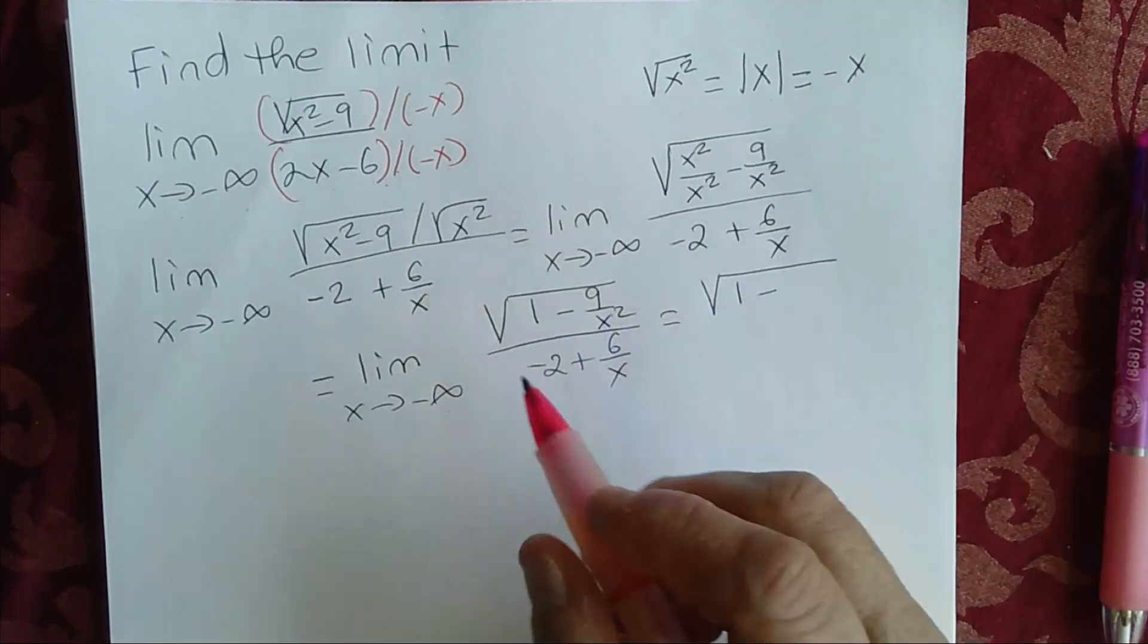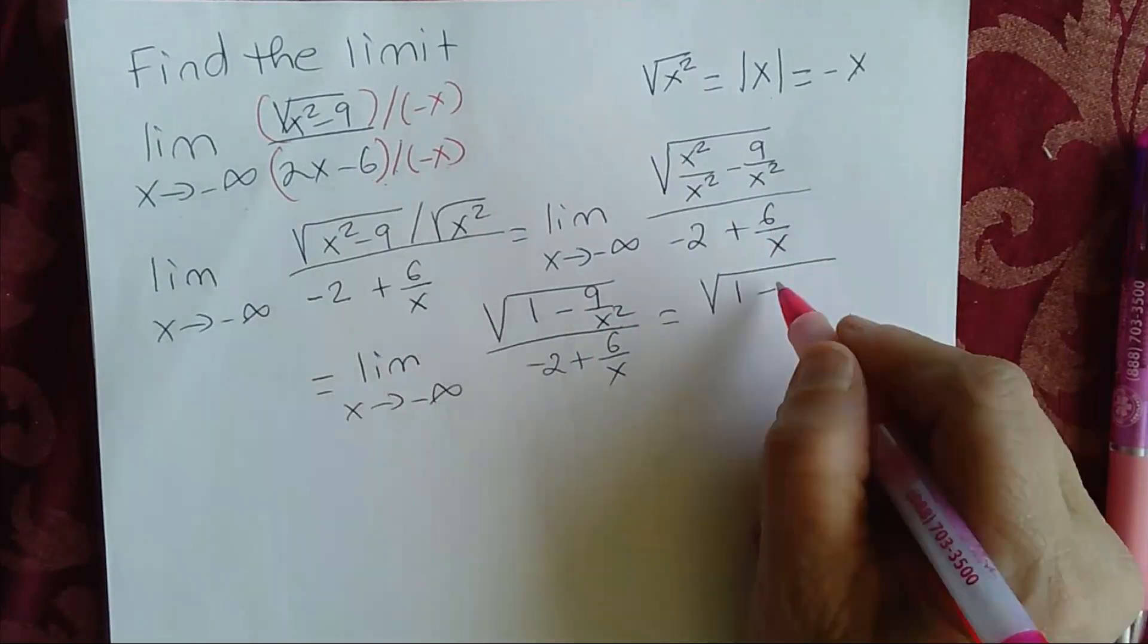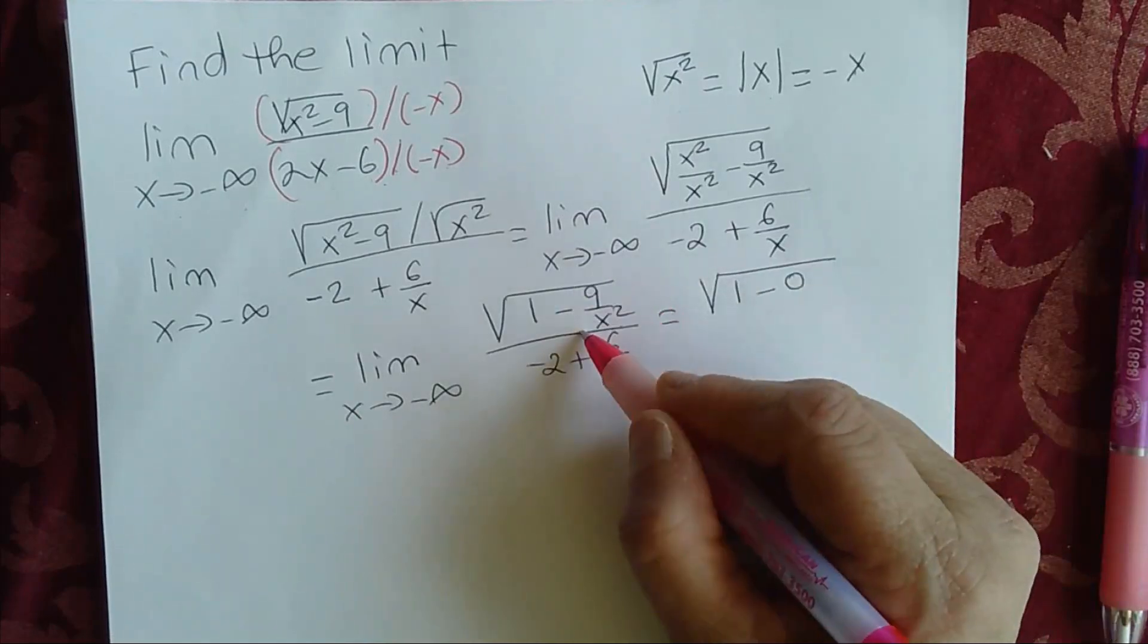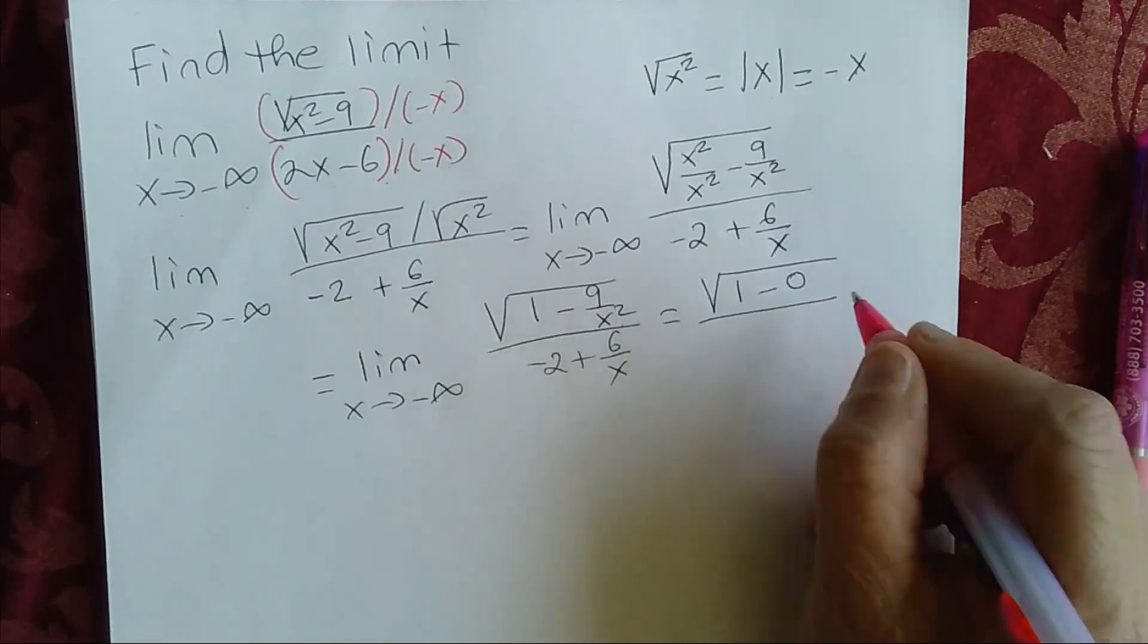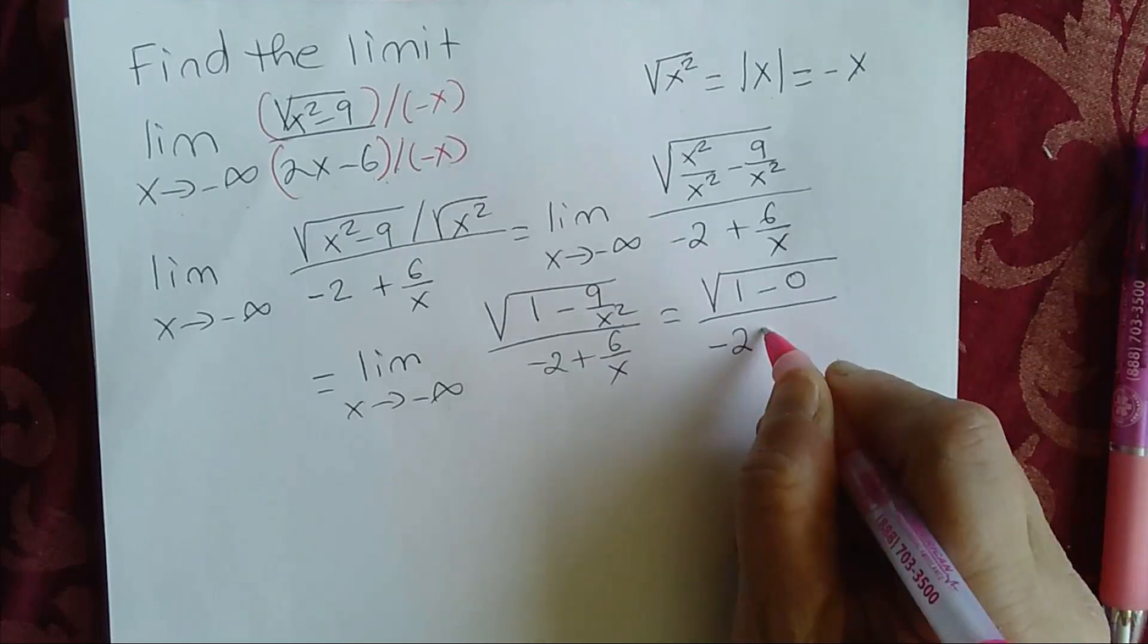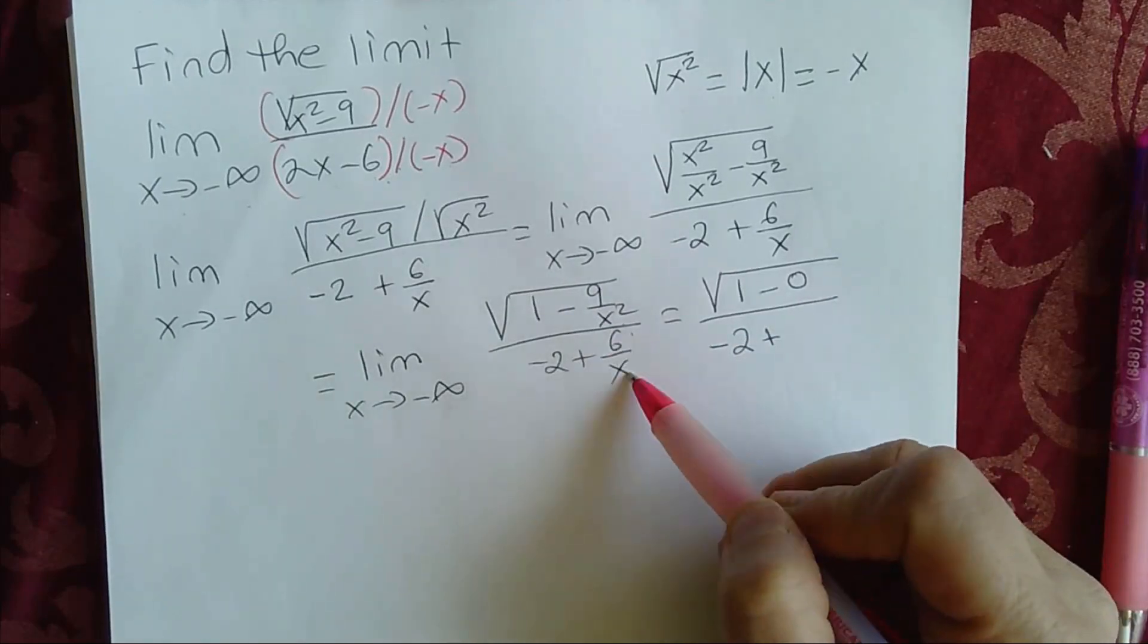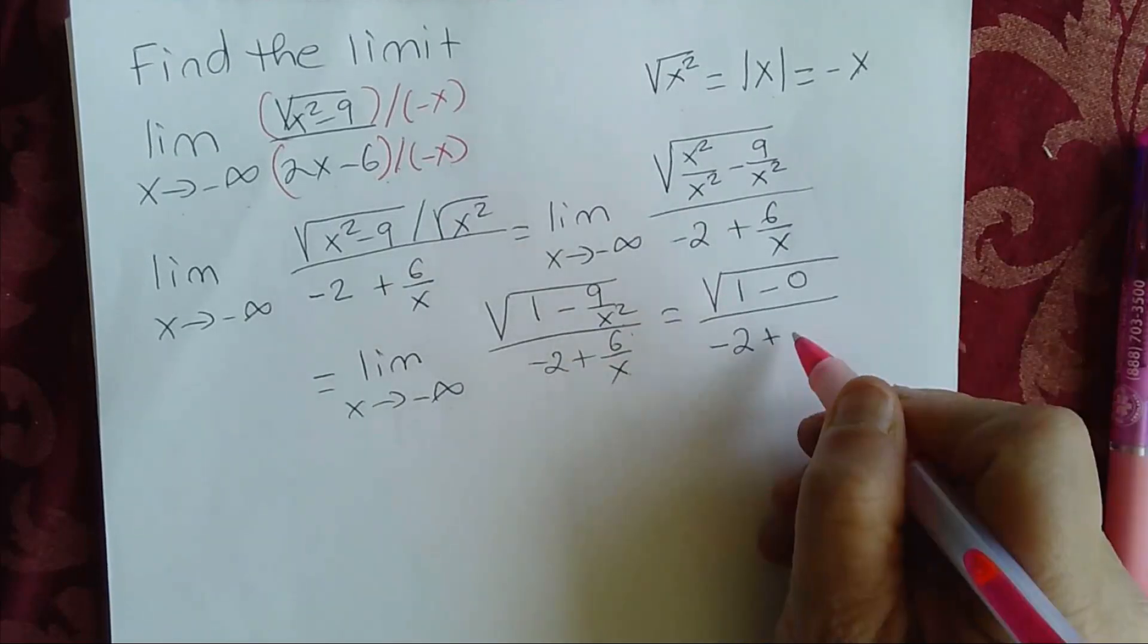Minus the limit of 9 over x squared as x approaches negative infinity, that's going to be 0. This is going to approach 0 as x approaches negative infinity. In the denominator, you have the limit of negative 2 is simply negative 2, plus the limit of 6 over x as x approaches negative infinity. That's also going to approach 0.